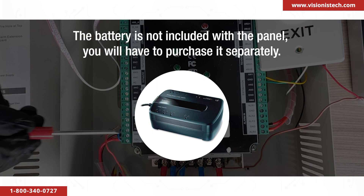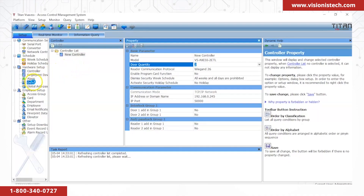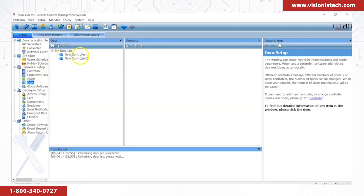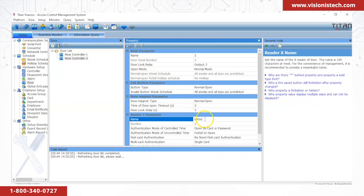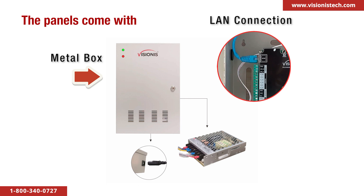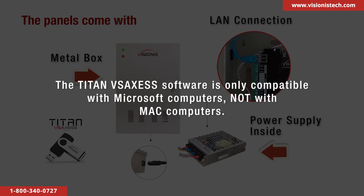An optional battery backup can be connected, but this battery is not included with the panel — you will have to purchase it separately. You can restrict certain users for certain doors and open doors from the Titan VS Access desktop software. It also supports 26 to 34 bits Wiegand interface for accessing card readers and is seamlessly compatible with third-party card readers. The panels come with a metal box, a wired network LAN connection, a 12V 8.5 amp power supply, and a Titan VS Access software USB. The Titan VS Access software is only compatible with Microsoft computers, not with Mac computers.